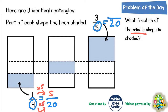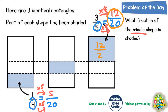Now let's do the same for three fifths. To get from five to twenty is four times bigger — five times four is twenty — so we times the top number by four as well, and three times four is twelve. So three fifths equals twelve twentieths. We can now write twelve twentieths onto the shaded part of the right rectangle, and five twentieths onto the shaded part of the left rectangle.